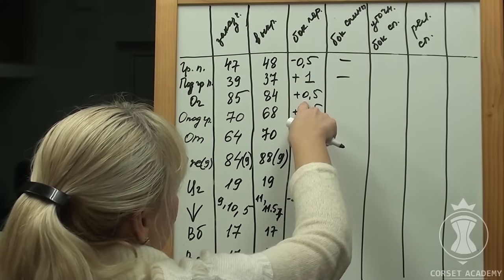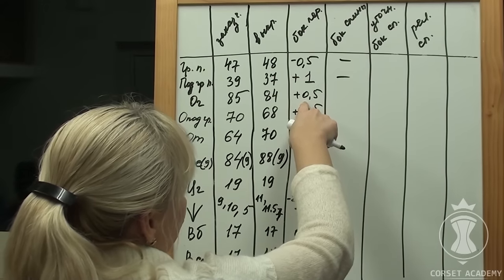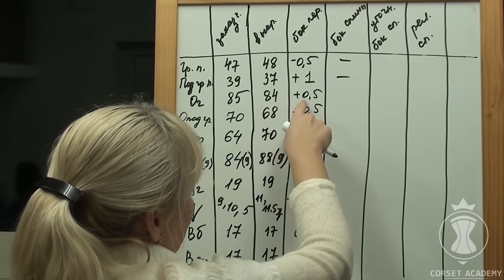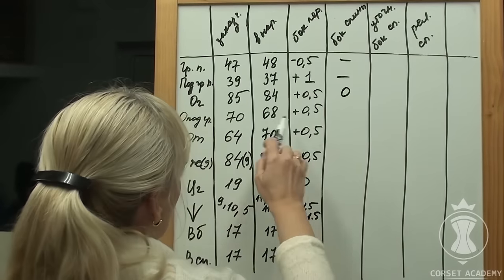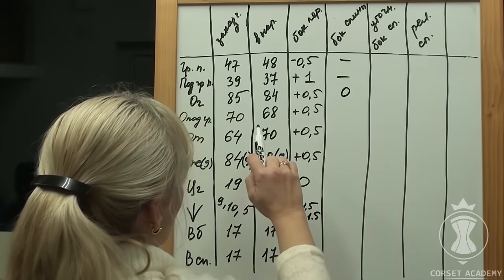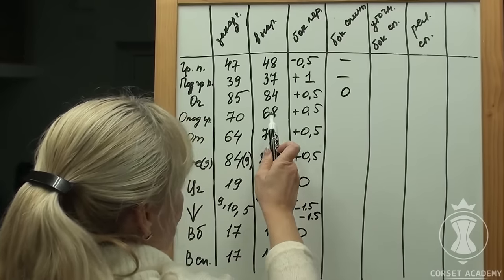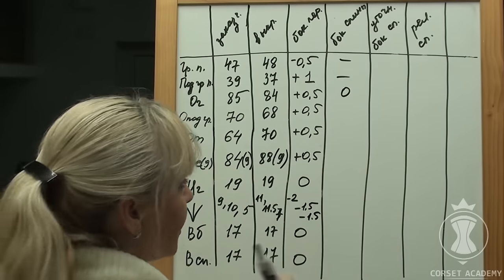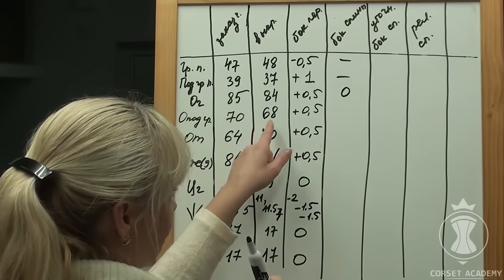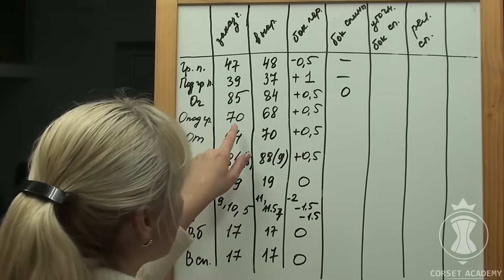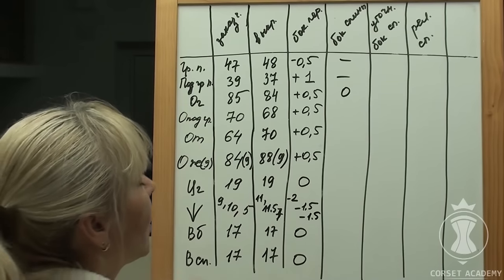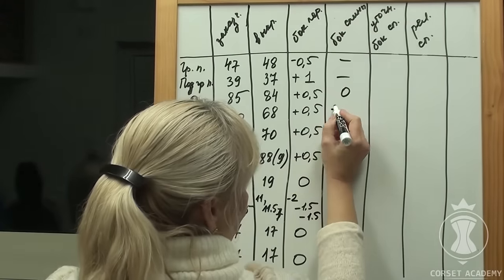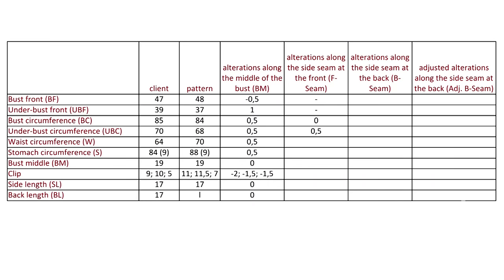Bust circumference: since we have already added 1 cm at the side of the front, we have 0 alterations at the back. Underbust circumference: it was 68 cm on the pattern, but we have added another cm and got 69 cm. It still lacks 1 cm to match the client's measurement of 70 cm. We need to divide this value by half and expand the pattern by 0.5 cm.